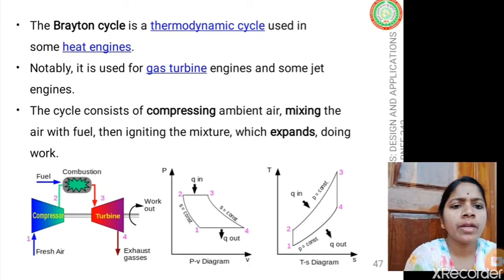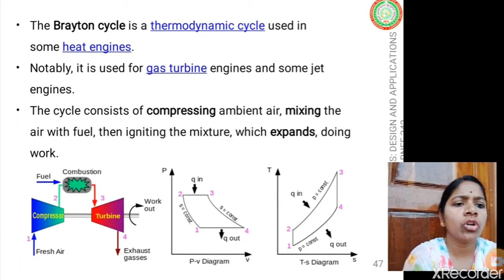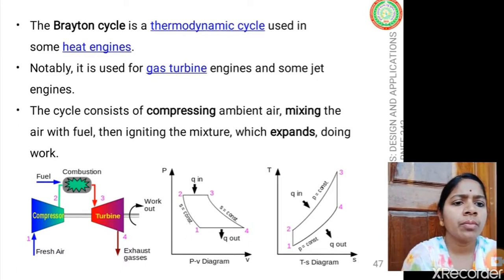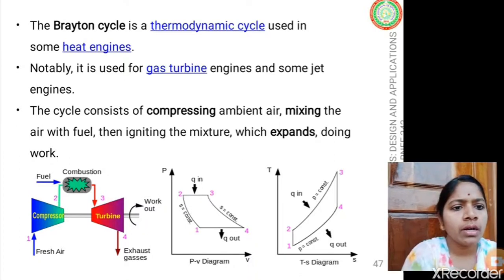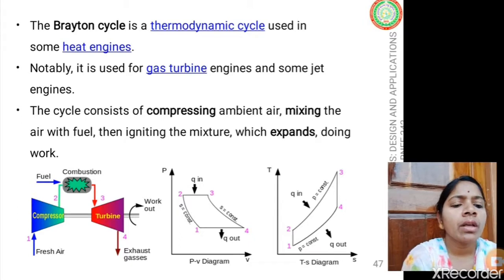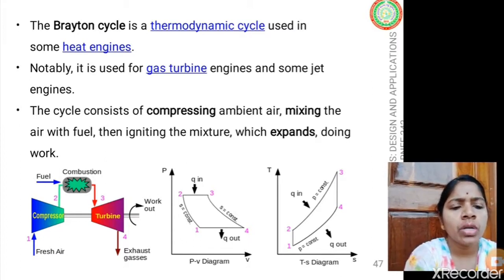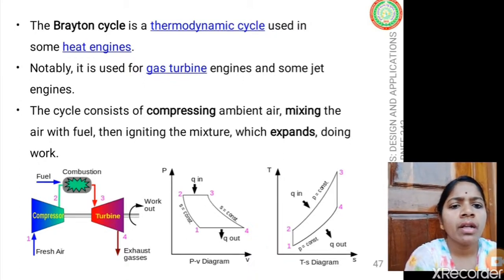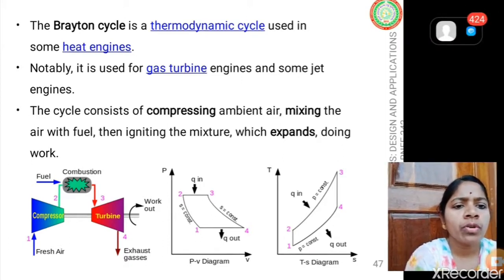The Brayton cycle can be depicted in two ways: the pressure-volume diagram and the temperature-entropy diagram. In the pressure-volume diagram, from one to two it is compression where entropy remains constant and volume decreases while temperature increases. From two to three, pressure remains constant but volume of the gas increases in the combustion zone. From three to four is expansion in the turbine, where the compressor receives work input and the turbine produces work output.